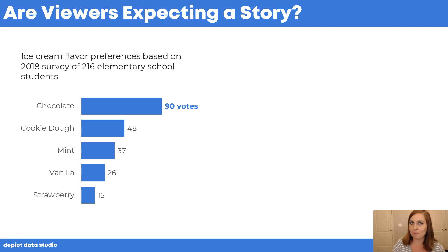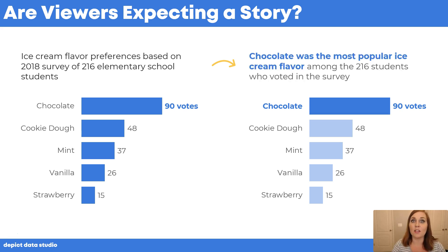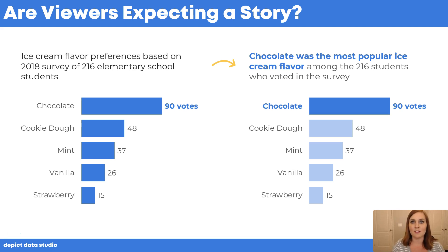Here's the same graph but the storytelling version. You use dark colors to guide people's eyes to one section of the graph, then you rewrite your title and state your takeaway message directly: 'Chocolate was the most popular ice cream flavor among the 216 students who voted in the survey.' It's really just a difference of the title and the color.